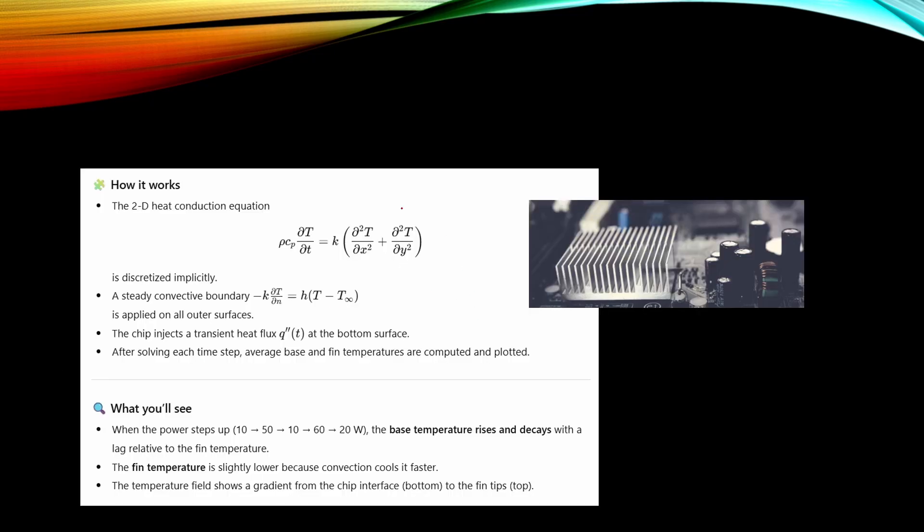Here we see how the mathematics works. We are handling a two-dimensional conduction problem now. And as a boundary condition we have this convective heat flux. Here this T is the temperature of the material and this is the temperature of our cooling air. And on the bottom we have this transient heat flux. And the code is now calculating from each time step the average base and average fin temperatures.